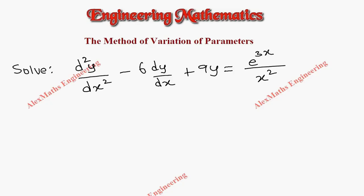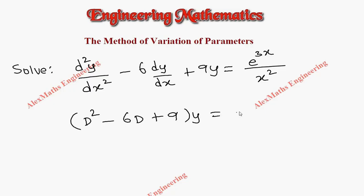Hi students, this is Alex here. In this video we are going to solve a problem using the method of variation of parameters. The question is: (D² - 6D + 9)y = e^(3x) / x².